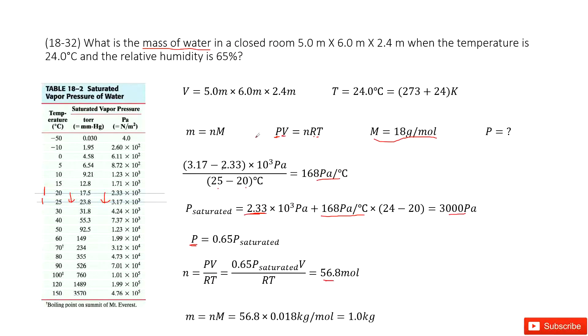Now you can see, we know the mole number, and also we know the mass for the water molecules is 18 grams per mole. So in this case, we can get the total mass for water. Thank you.